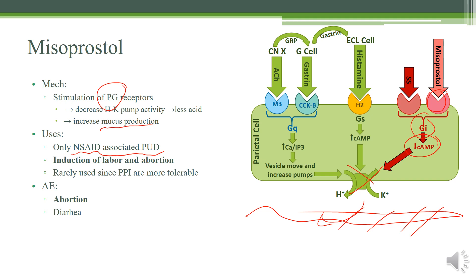The main reason that we use misoprostol in a clinical setting is going to be for induction of labor or abortion. Sometimes a woman will have a miscarriage, or she'll choose to have an elective abortion, and we provide misoprostol as a way to help with getting the products of labor out of her uterus. This is rarely used for GI conditions, since proton pump inhibitors are much more tolerable. Remember, the adverse effect can also be abortion — so don't ever give this drug to a pregnant woman if she's planning on keeping her baby.